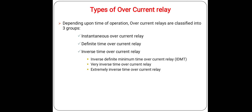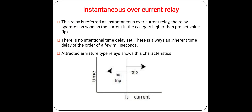There are basically three common types of overcurrent relays: instantaneous overcurrent relay, definite time overcurrent relay, and inverse time overcurrent relay. Further, the inverse time overcurrent relay is subdivided as Inverse Definite Minimum Time relay — also known as IDMT relay — very inverse time relay, and extremely inverse time overcurrent relay. We will see each type step by step.